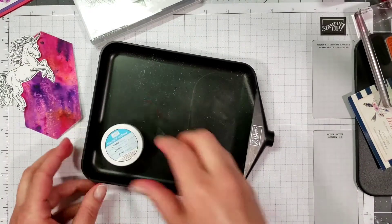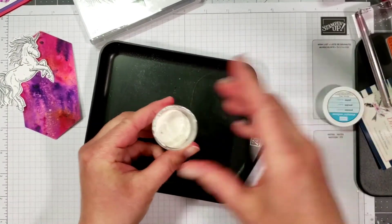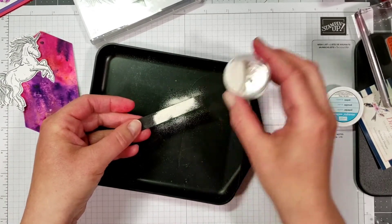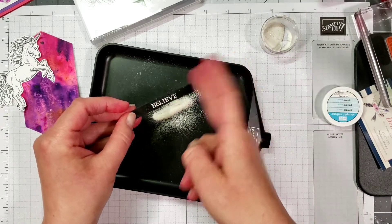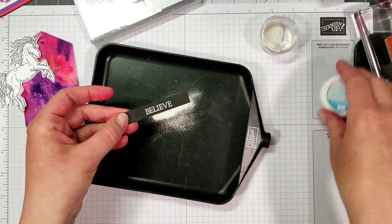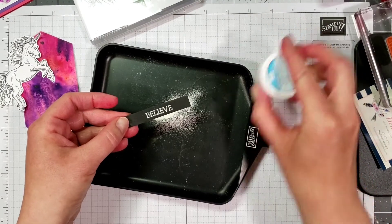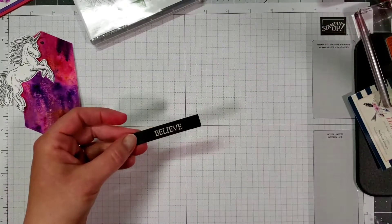And then I'm going to use my embossing gun to heat it, get it all nicely melted ready to go.